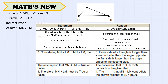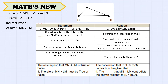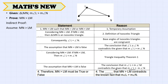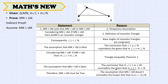Considering MN less than LM: by Triangle Inequality Theorem 1, the measure of angle L would be less than the measure of angle N. This assumption is also false because it contradicts the given that the measure of angle L is greater than the measure of angle N. Therefore, MN is greater than LM must be true, as this assumption does not contradict any known fact.